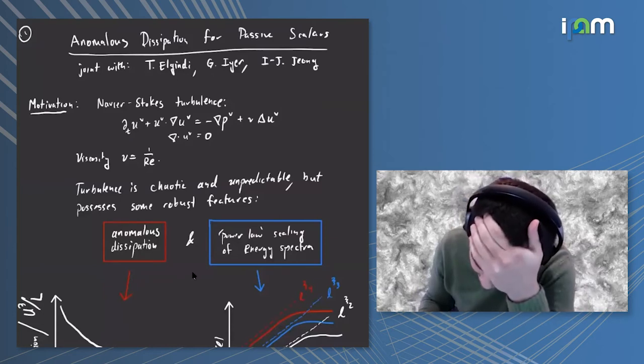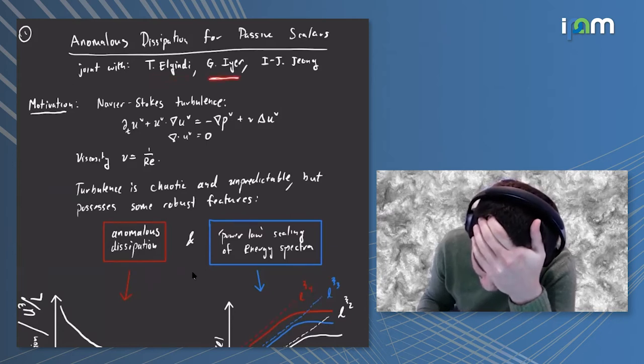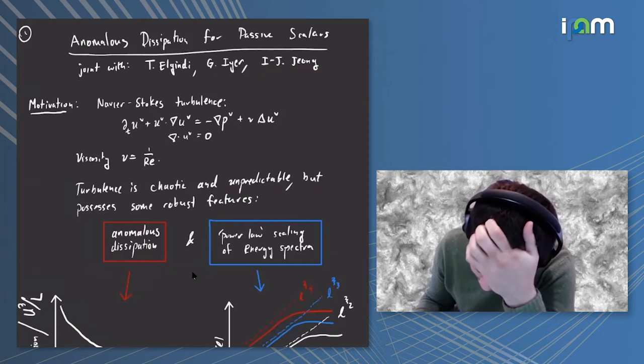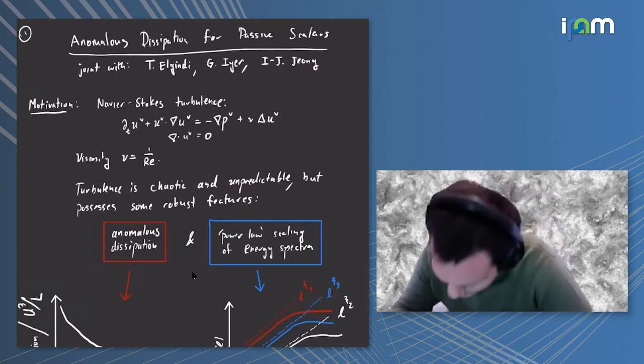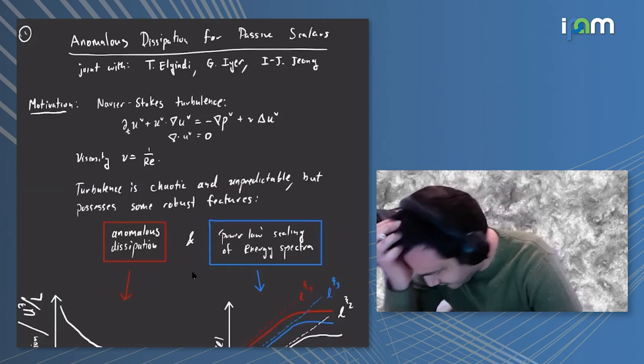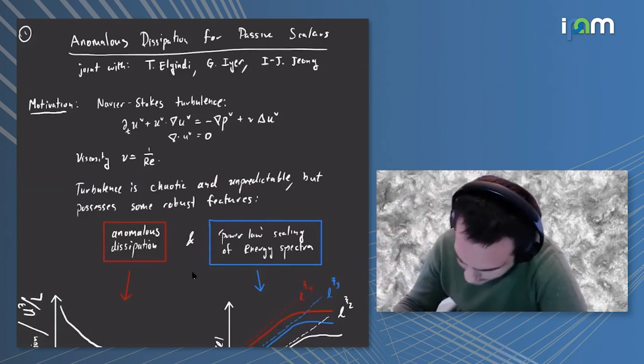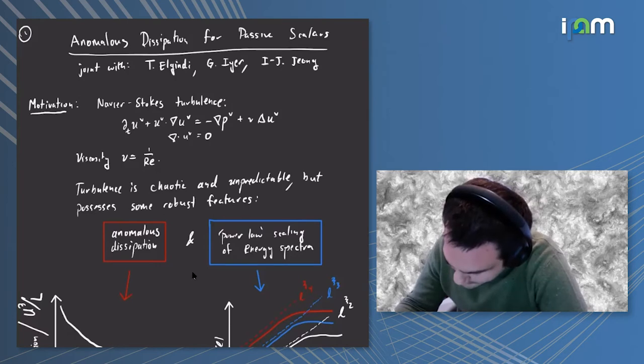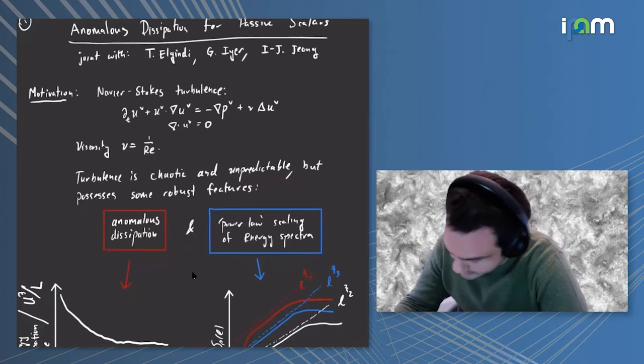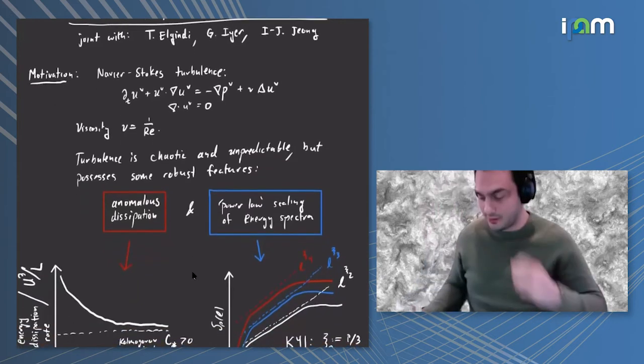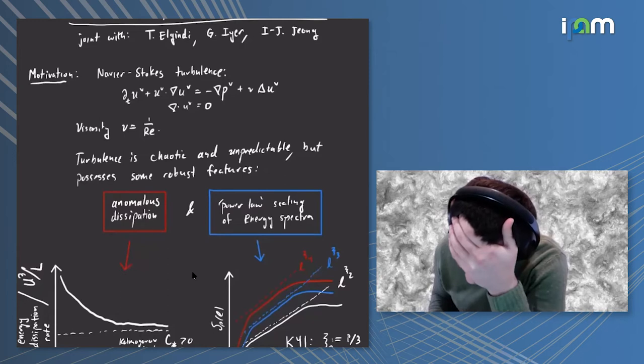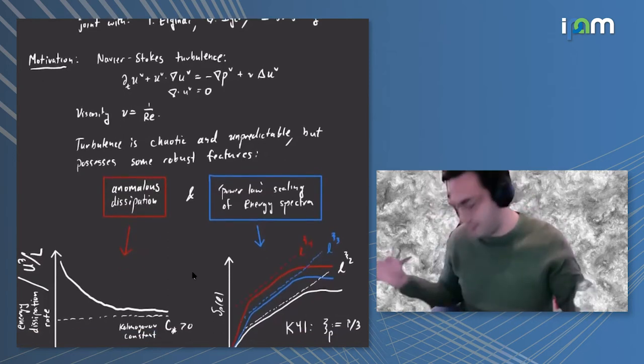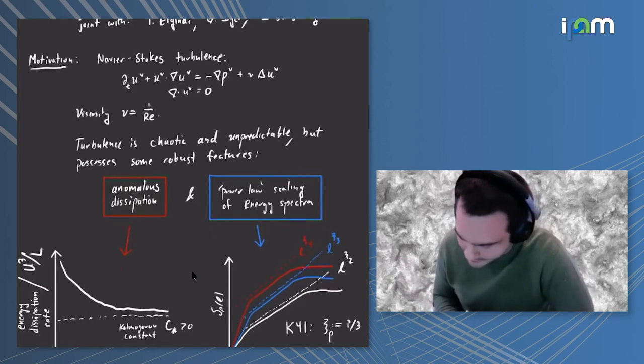I'll be talking about anomalous dissipation and passive scalar transport. This is joint work with Tarik Elgindi, Gautam Iyer, and Inge Johnson. The motivation comes from Navier-Stokes turbulence. Everybody here I think is familiar with this concept of the zeroth law of turbulence.